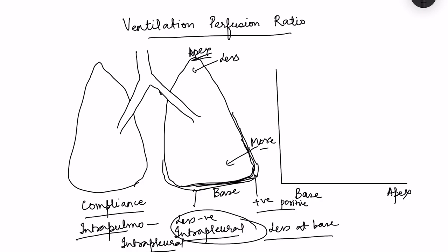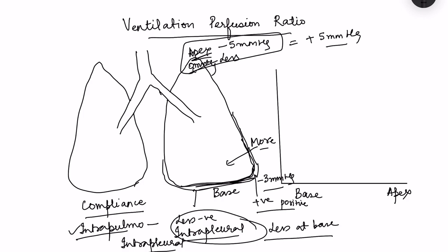Let us use numbers: at the apex intrapleural pressure is −5 mmHg, and at the base due to gravity it is less negative — say −3 mmHg. Alveolar (intrapulmonary) pressure at equilibrium is 0 mmHg. The distending pressure at the apex is 0 − (−5) = +5 mmHg, while at the base it is only +3 mmHg.